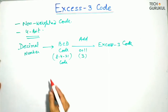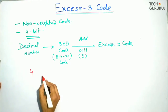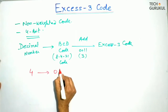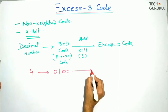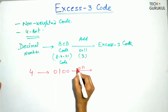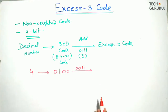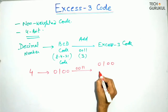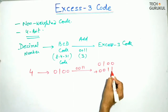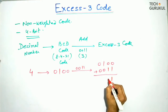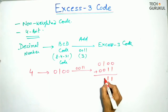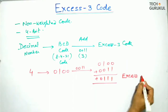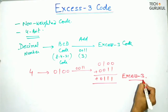For example, if the number 4 is given, we write the BCD code for 4 as 0100. Now we add 0011 to make it the XS3 code. So 0100 plus 0011 gives 0111. So this is the XS3 code for the decimal number 4.